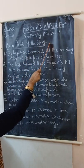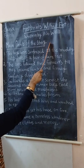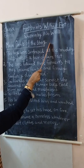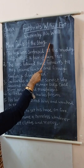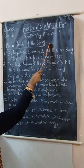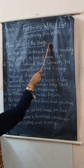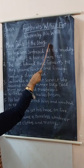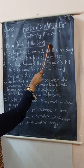H.G. Wells was a great writer who wrote novels, history, and science fiction. The most famous works of H.G. Wells are The Time Machine, The Invisible Man, and The Island of Dr. Moreau. He died on 13th August 1946.